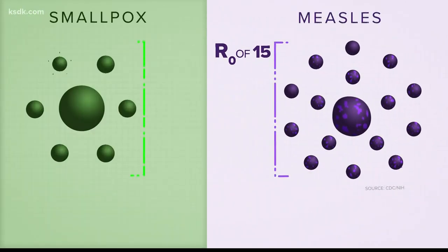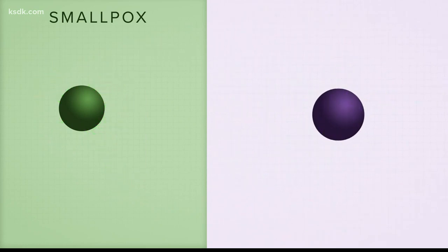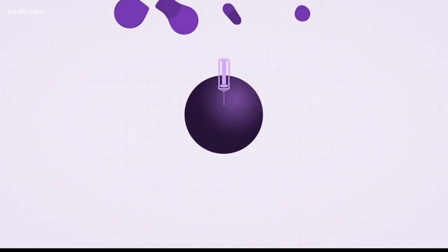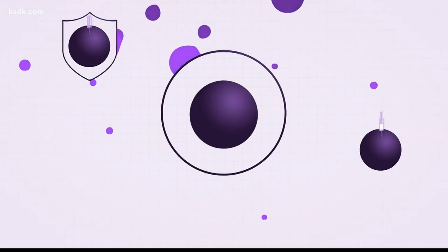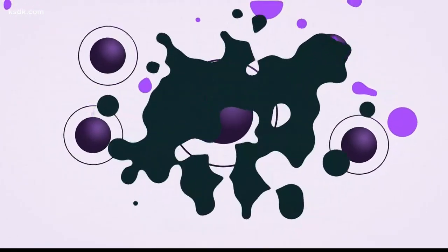The R-naught of smallpox? 6. Both are very contagious. But measles remains rare, and no one gets smallpox anymore. Credit the rise of vaccinations, an effective shield against contagion. Maybe a few dots received one, maybe that one didn't. But see what it does to spread.